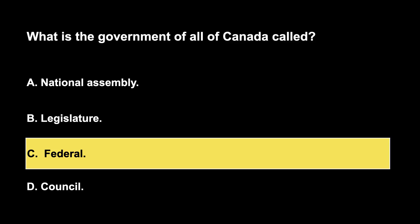The correct answer is C. The government of all of Canada is called the federal government. It is responsible for national level decision making and governance, as opposed to provincial or municipal governments.